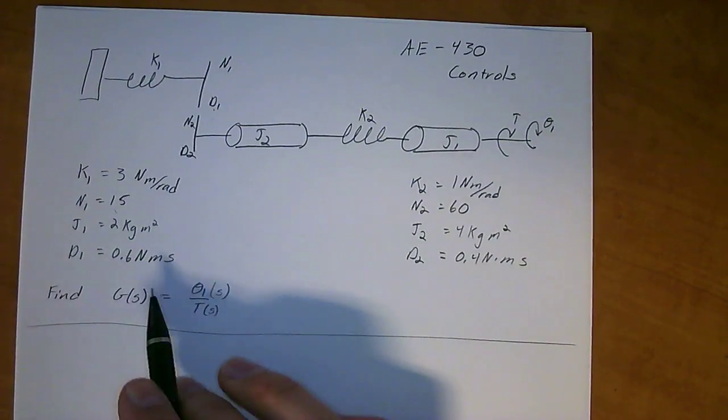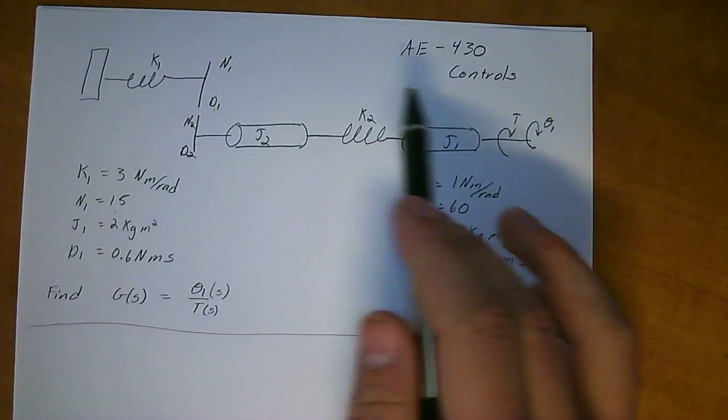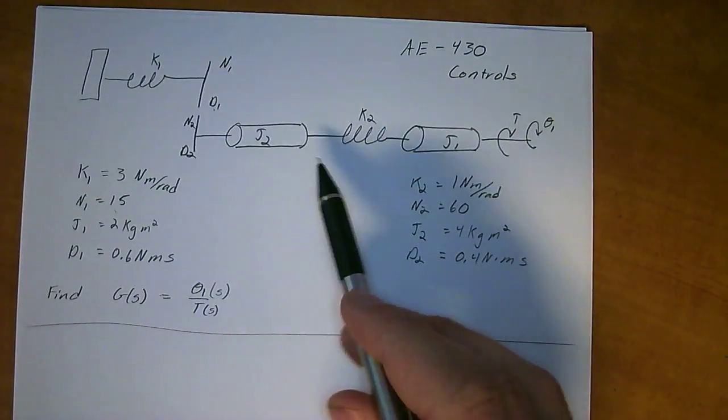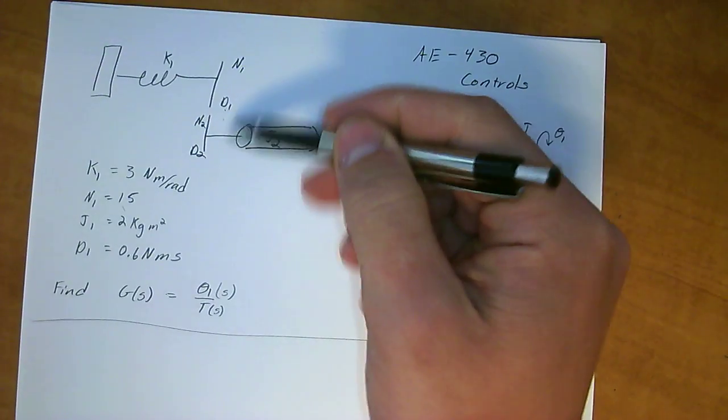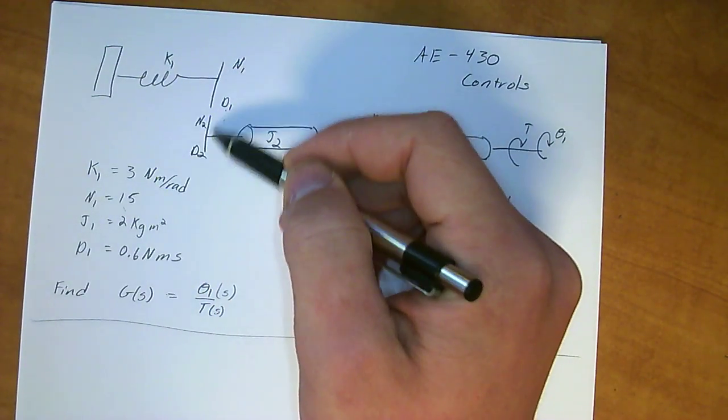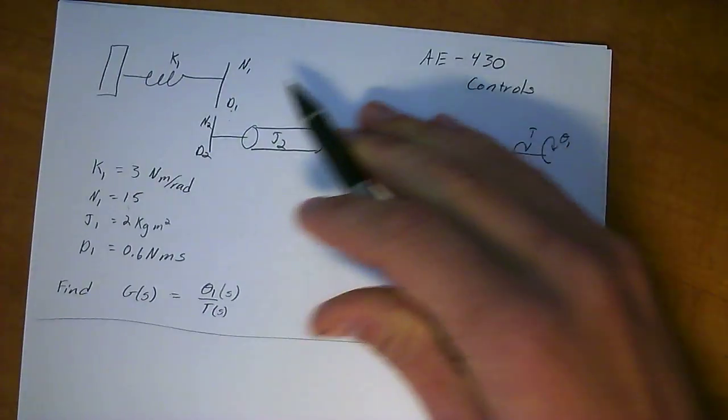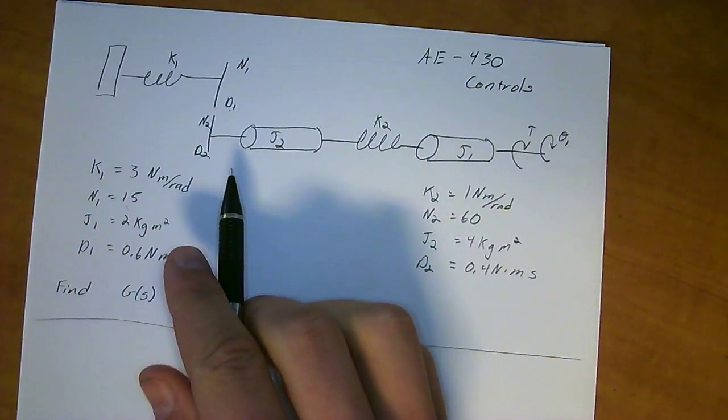What we have to do is find the transfer function. But obviously to find the transfer function we first have to define the equations of this system. But you can't do that with gears right here because this spring has a gear ratio related to it as it goes towards these. So you have to transfer either this side through the gears or the spring down through the gears.